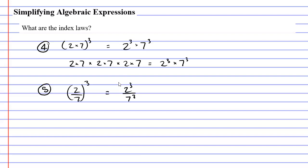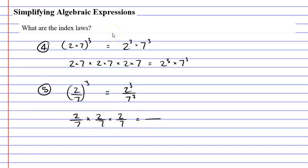So why is it that we're allowed to do this? Well, let's look at what's inside the brackets: we've got 2 over 7. Because this fraction has been put to the power of 3, we can expand it and simply write it as 2 over 7, times 2 over 7, times 2 over 7 — three times. When you multiply fractions you multiply the top numbers separately from the bottom numbers. So we're multiplying 2 three times, which we can write as 2 to the power of 3, and we're multiplying 7 three times at the bottom, which we can write as 7 to the power of 3.